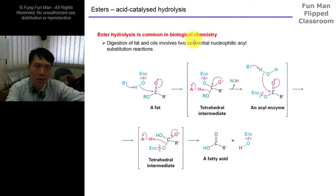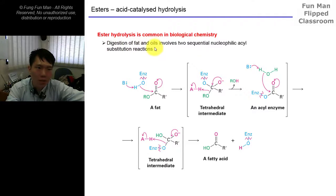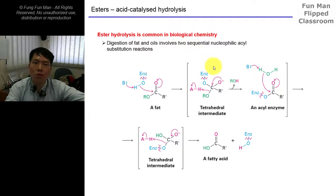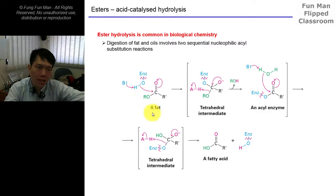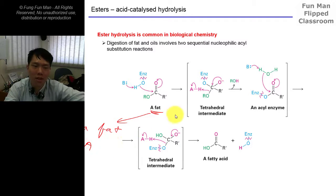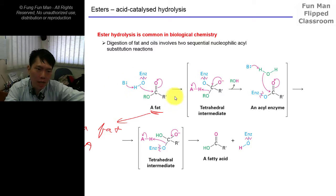Ester hydrolysis is very common in the biological pathway of the human body and in animals. When we digest fat and oil, it involves two sequential nucleophilic acyl substitution reactions. A fat molecule - an enzyme connects to it and breaks down the fat via this pathway.